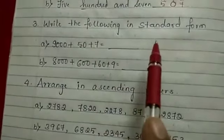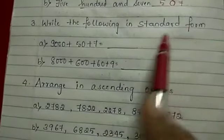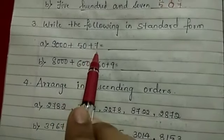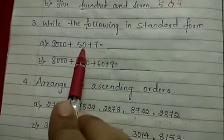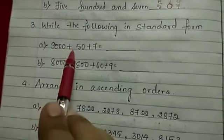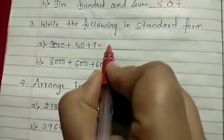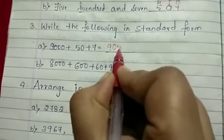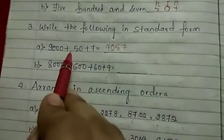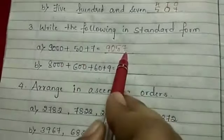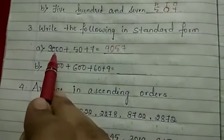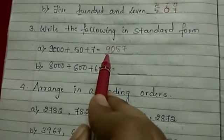Third exercise: write the following in standard form. For 9000 + 50 + 7: we have the 1's place, 10's place, and 1000's place, but not the 100's place. So: 1's is 7, 10's is 5, 100's is 0 (no number there), and 1000's is 9. The answer is 9057.